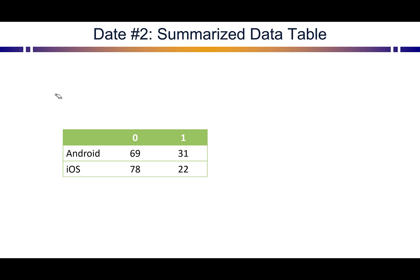You could also see the data set up this way, as a summarized data table. So now we have our Android users. We see that 31 out of 100 of them turned on the feature. And for our iOS users, 22 out of 100 turned on this new feature.